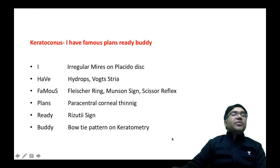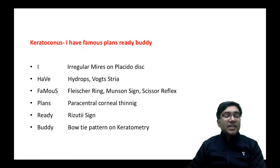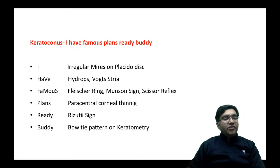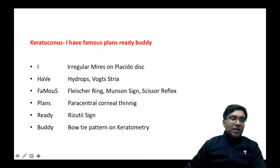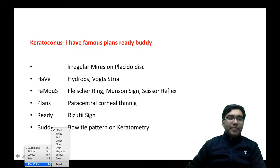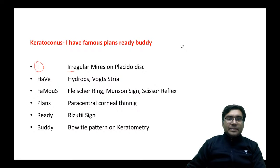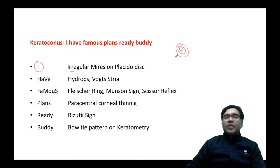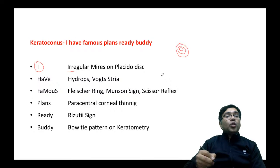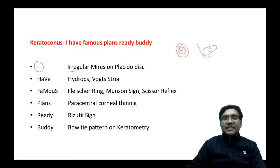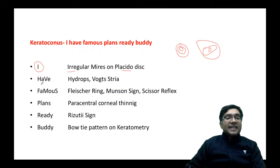A very important mnemonic for keratoconus is 'I have famous plans ready buddy.' I stands for irregular mires on the placido disc keratoscope — in diseased cornea like keratoconus, we get irregular mires. H is for hydrops — because of thinning of the cornea, aqueous humor percolates up to the Descemet's membrane and stroma.